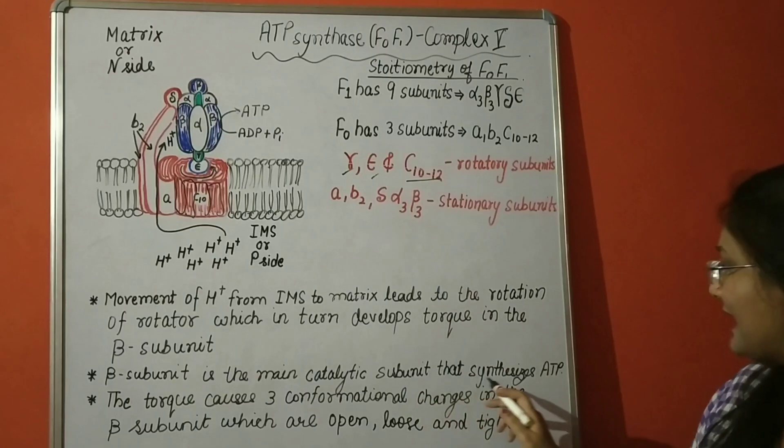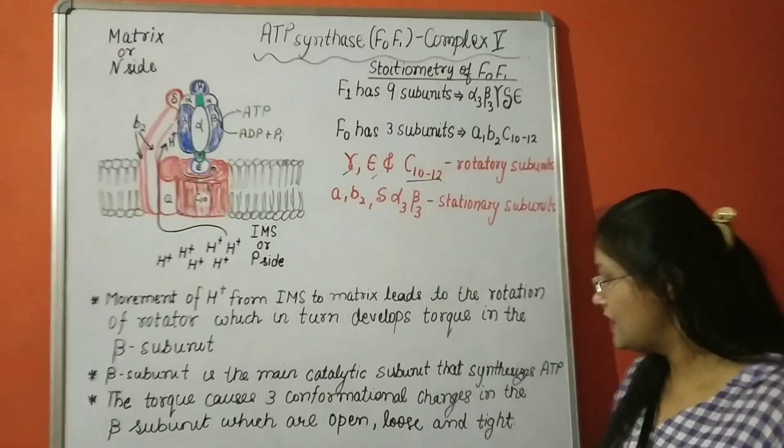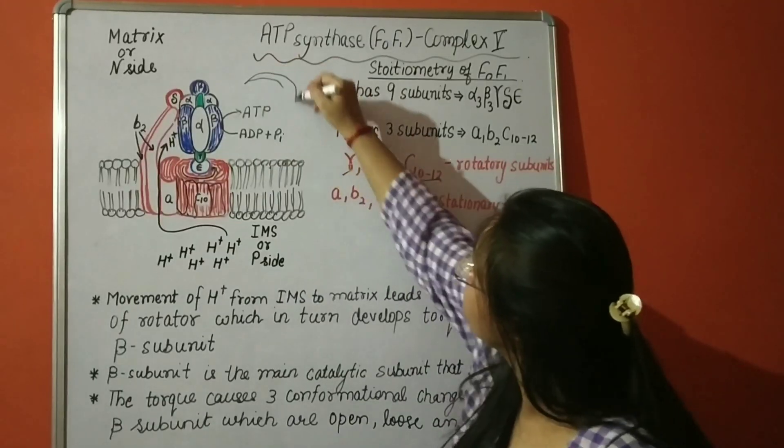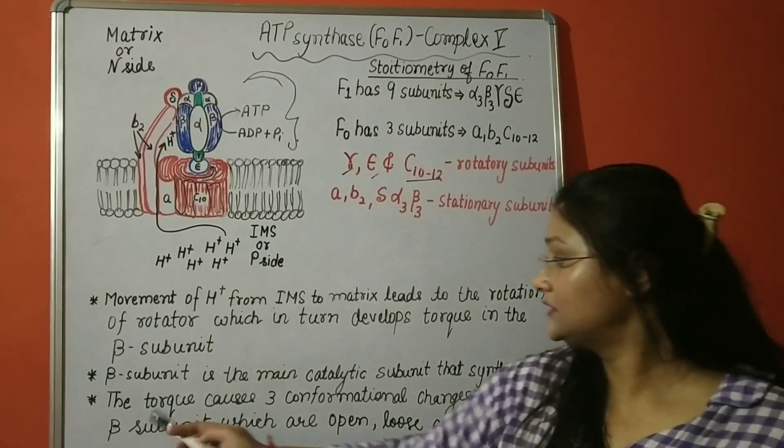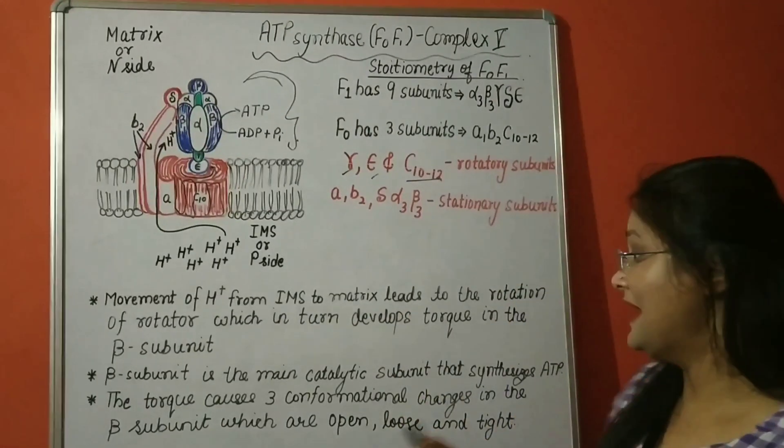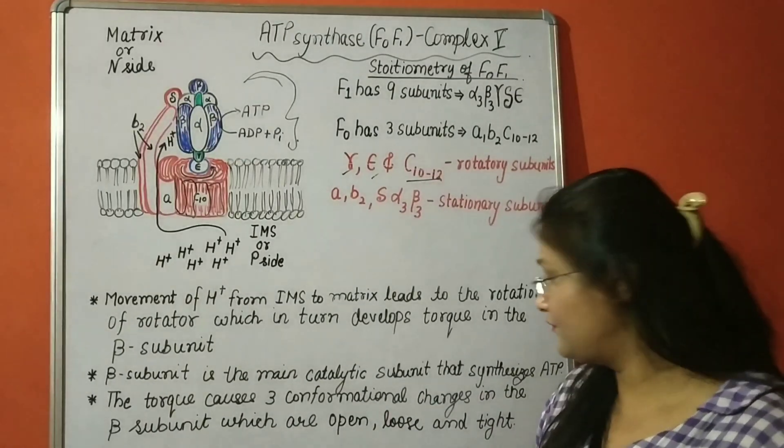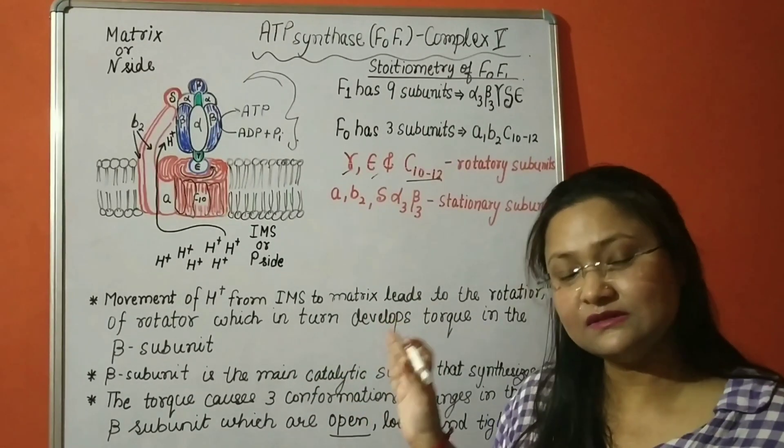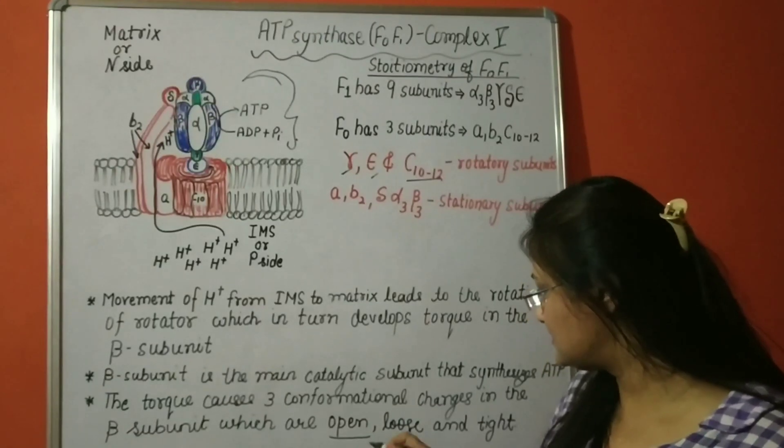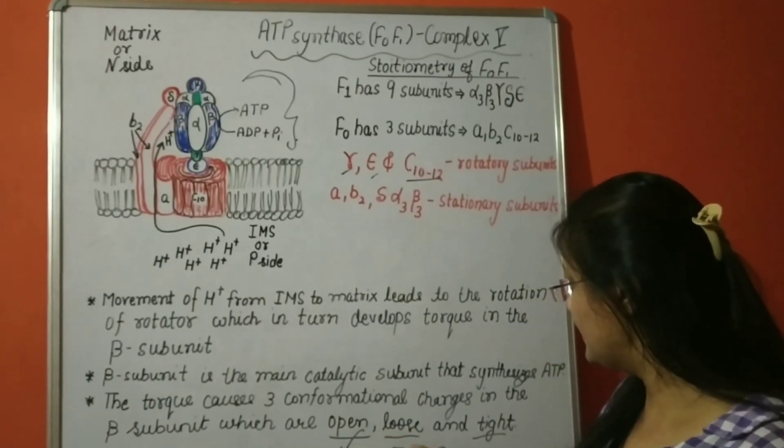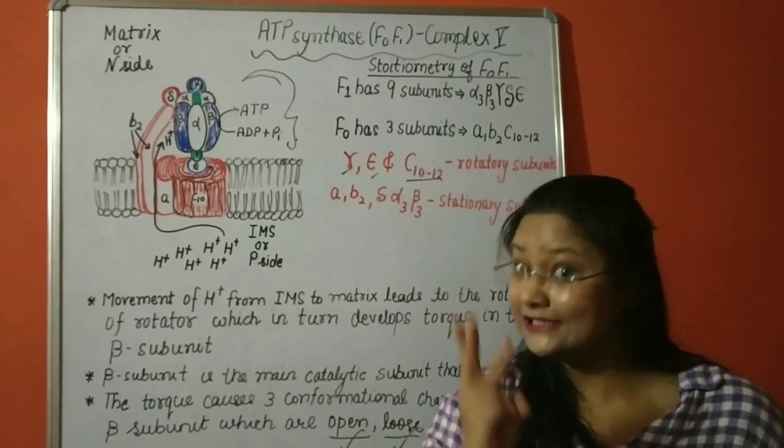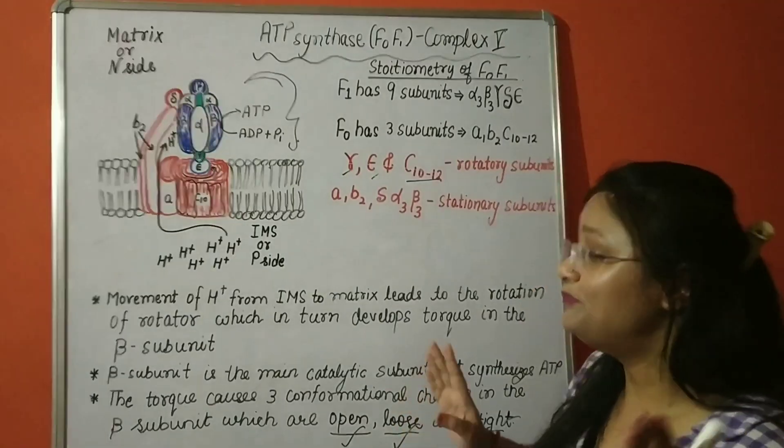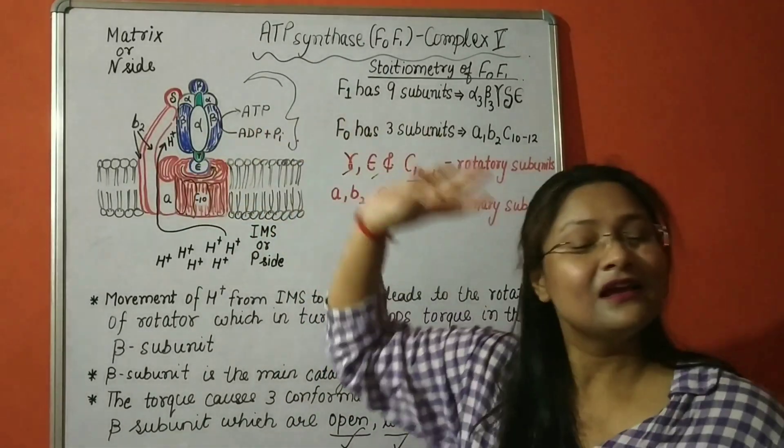As already said, beta subunit is the main catalytic subunit. It is the main catalytic subunit that synthesizes ATP from ADP and inorganic phosphate. Also, the torque causes three conformational changes in the beta subunit which are open, loose and tight. These are the three conformations produced in the beta subunit due to the torque generated by gamma subunit.